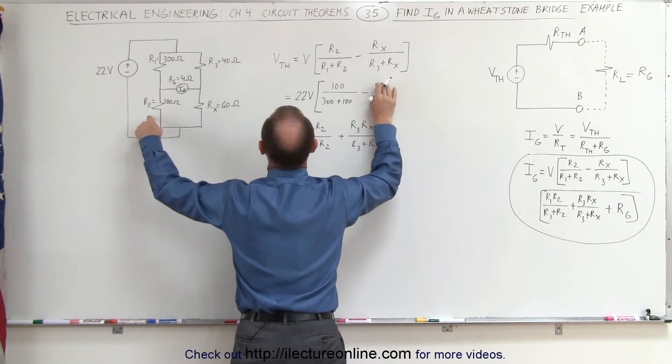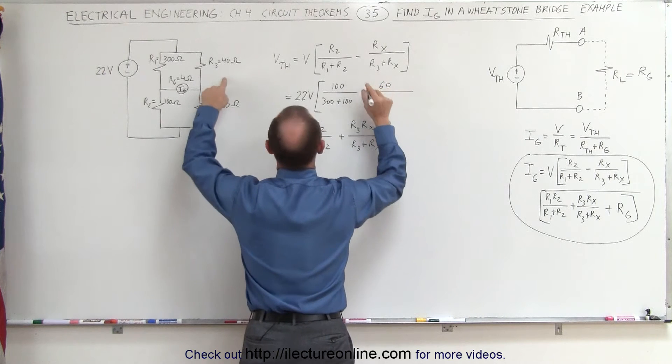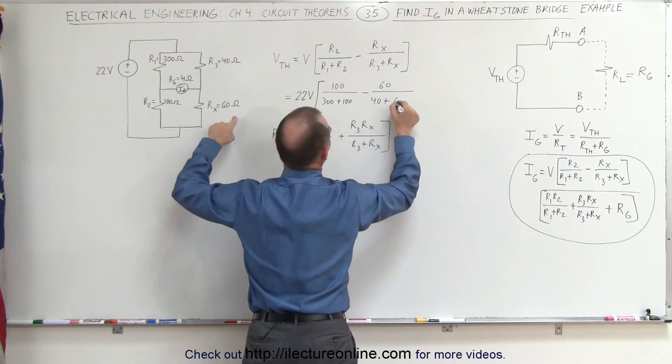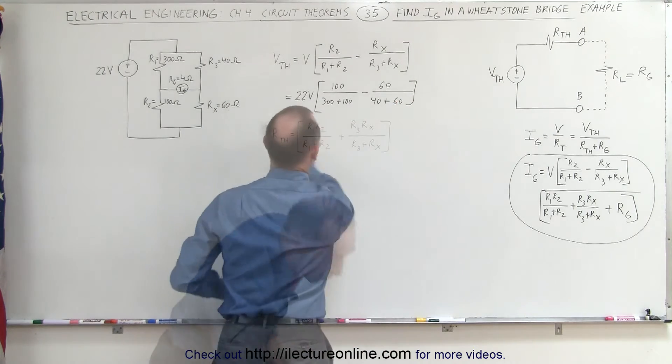minus Rx, which is 60, divided by R3, which is 40, plus Rx, which is 60. I wish I'd give myself some more room, so let me go ahead and do that.